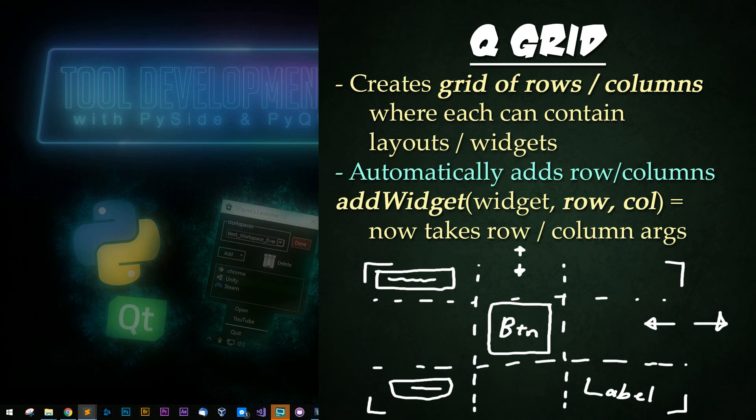QGrid creates a grid of rows and columns that each contain layouts and widgets. QGrid sets the amount of rows and columns based on the largest number of rows and column values for stuff that we've added. This is super useful for when you have many widgets horizontally and vertically that need to stay size relative to each other.